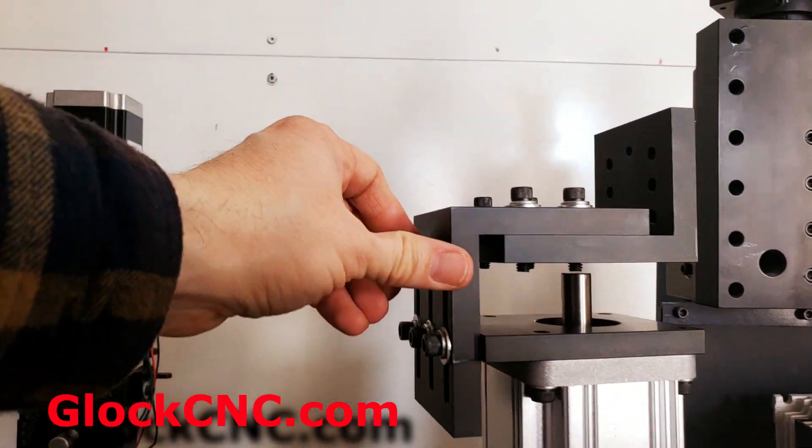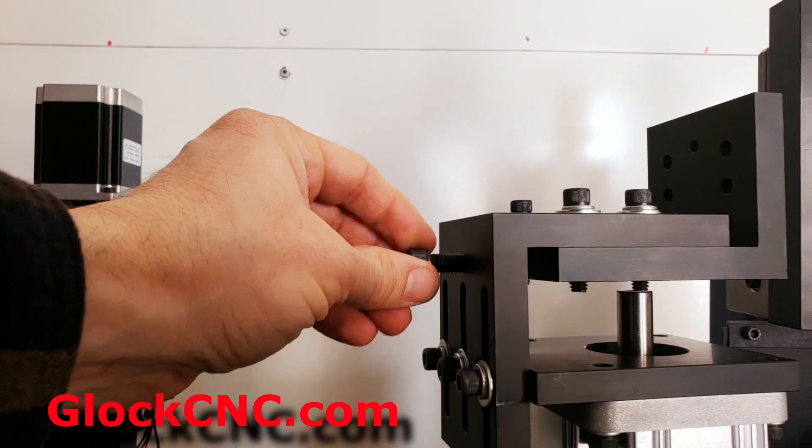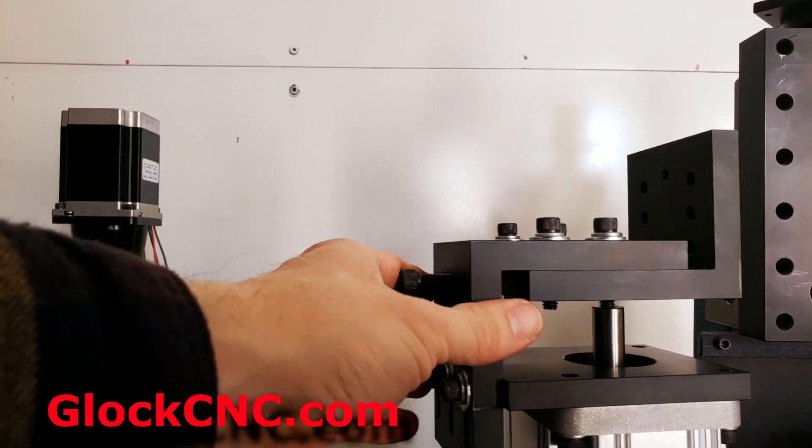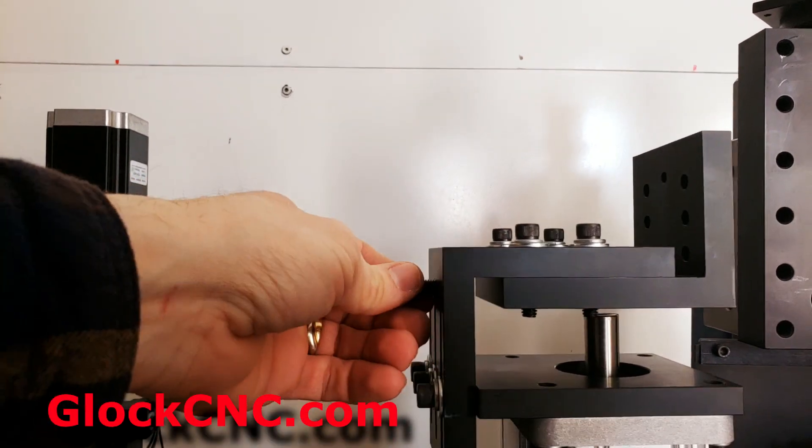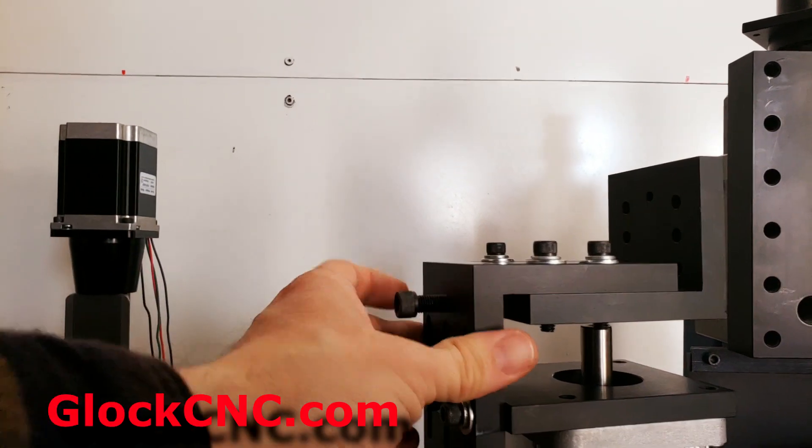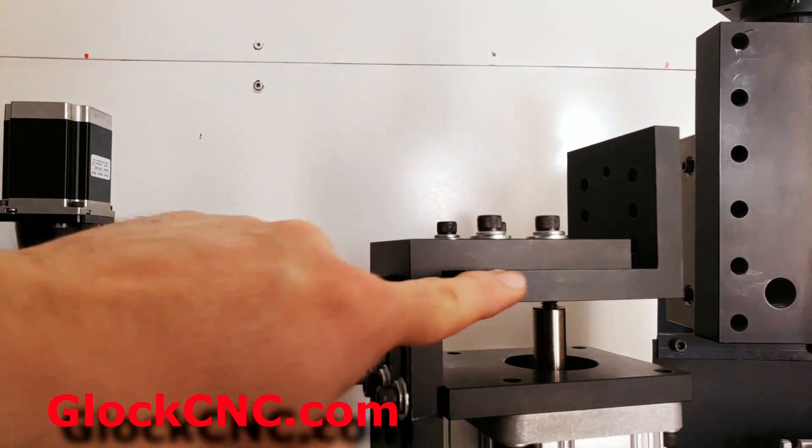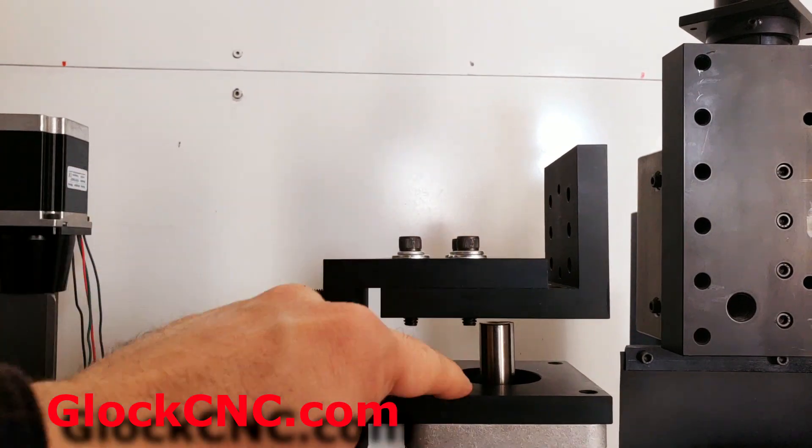We also have in here a tensioning screw. Most people don't use it so we don't give you the screw, but if you want it you can get a screw and put it in here and it'll push against this portion of the bracket to tension the belt.